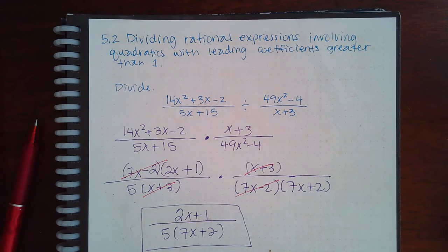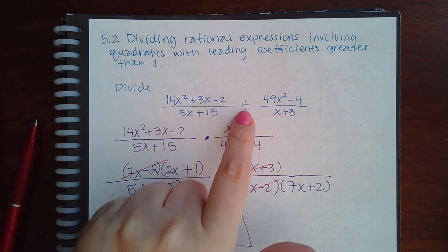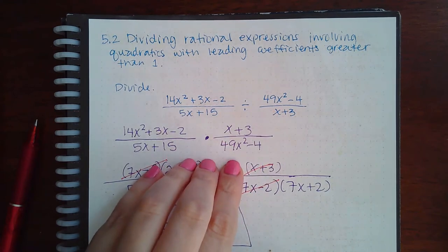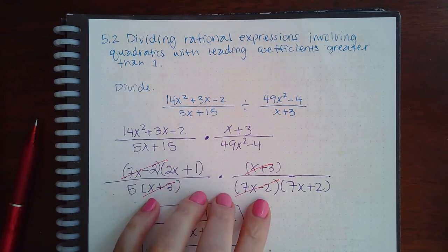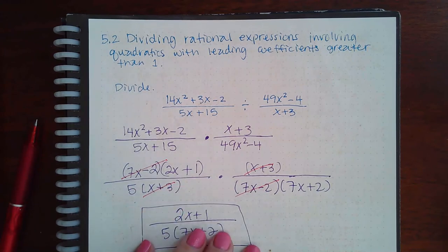But the process is what you need to get down. When you have division, you're always going to change that to multiplication and then flip the following fraction. Once you have everything written in multiplication, you just factor every single numerator and every single denominator, and then you start reducing the common numerators and denominators and then you write your final answer.